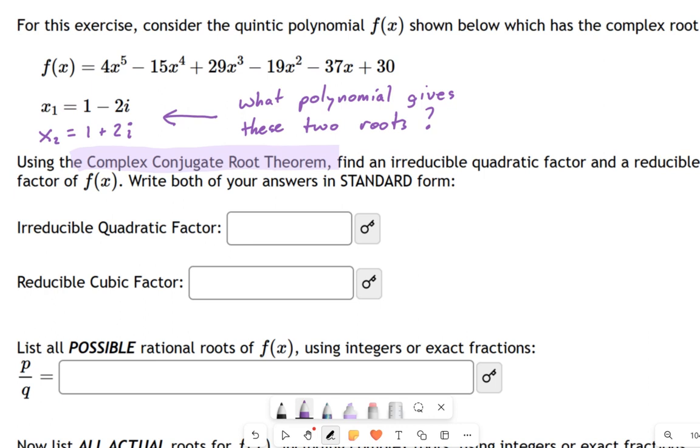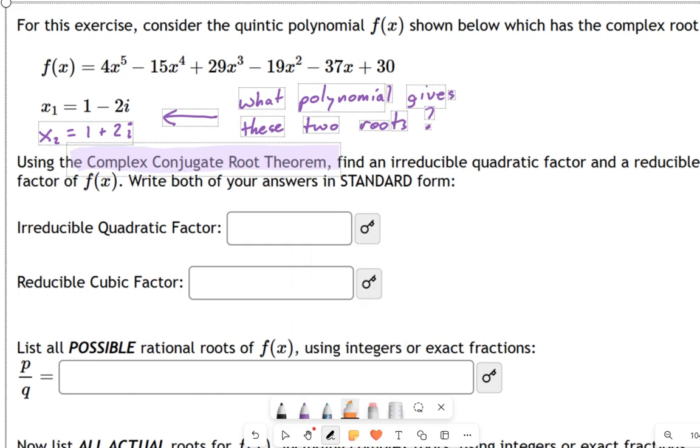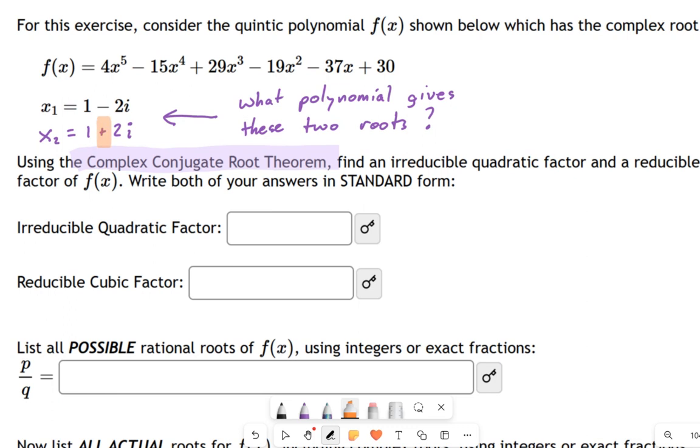The question I'm going to pose to you right at the beginning here is: what polynomial gives these two roots? This root, x1, the problem told you. But the next root right below it, x2, I got by knowing what the complex conjugate root theorem says, which is basically this: if you have 1 minus 2i, then the other root has to be 1 plus 2i. You just switch that sign.